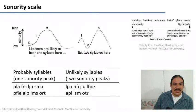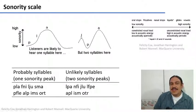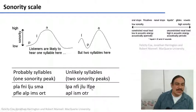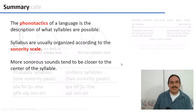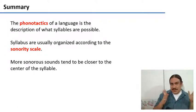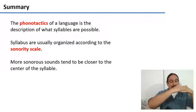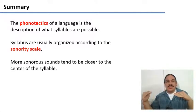In general, languages accept syllables that have clear sonority peaks — for example, 'pla,' where you ascend in sonority and then descend. Syllables with two high sonority peaks, such as 'upa,' are generally not used in human languages because people perceive them as two separate syllables. In summary, the phonotactics of a language is the description of which syllables are possible, and syllables are usually organized on a sonority scale, going from less sonority to a peak and then descending.